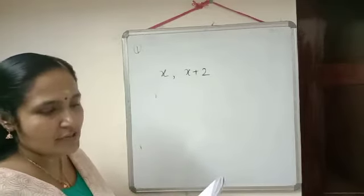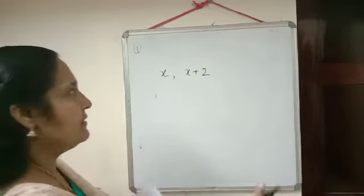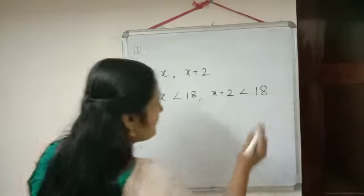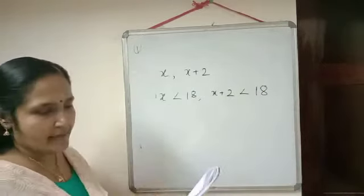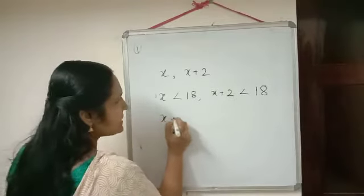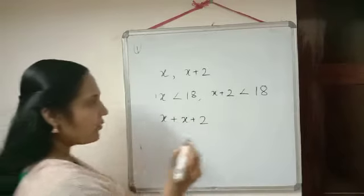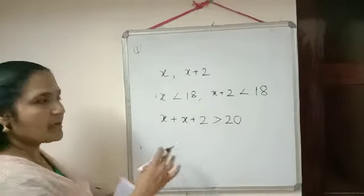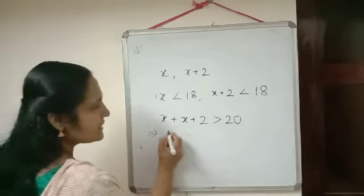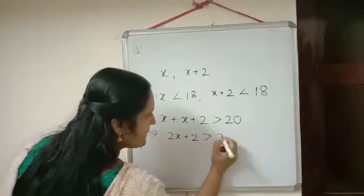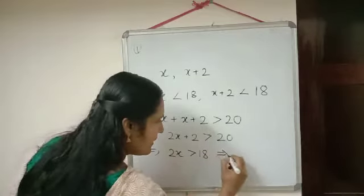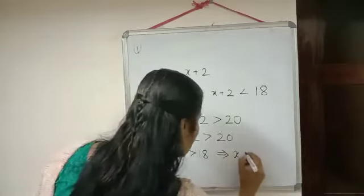Now check the conditions given in the question. Both of which are smaller than 18 — so the first condition is x is smaller than 18 and x plus 2 is also smaller than 18. And the second condition is their sum is more than 20. The two numbers are x and x plus 2, so their sum x plus x plus 2 equals 2x plus 2, which should be greater than 20. Solving: 2x greater than 18, so x greater than 9.